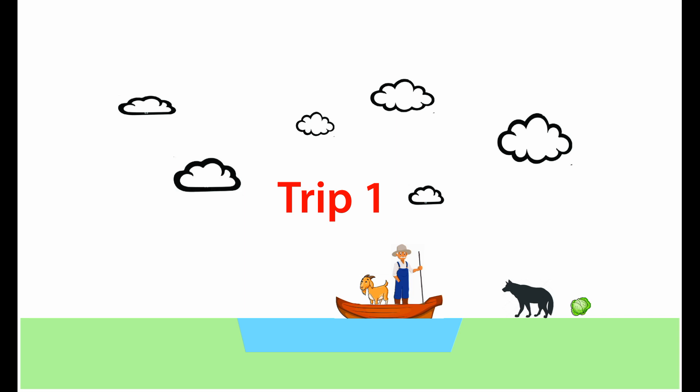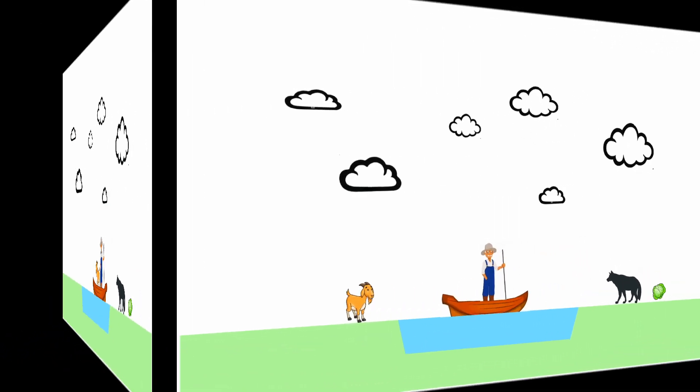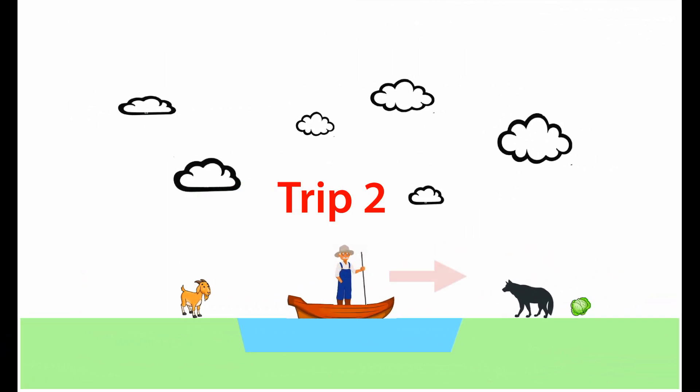The first trip, it has to be the farmer and the goat. That's the only option. Trip two, the farmer comes back solo.